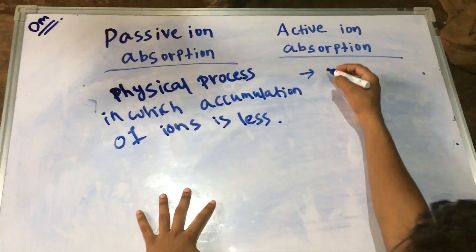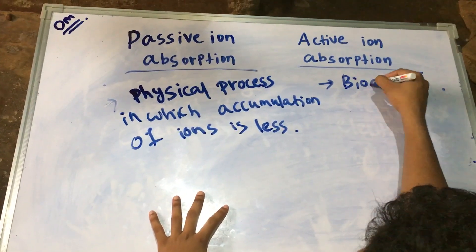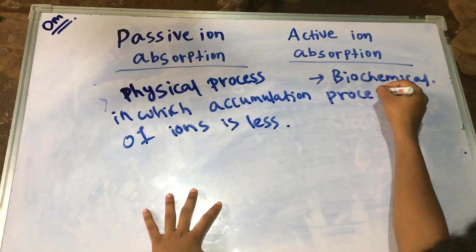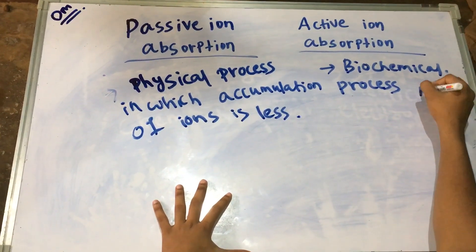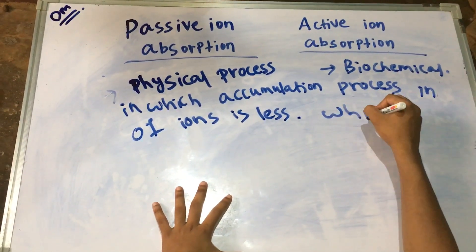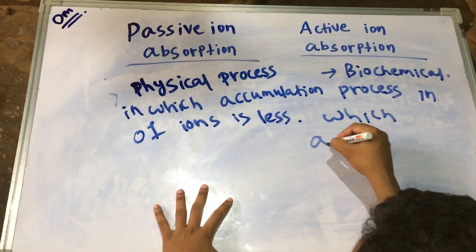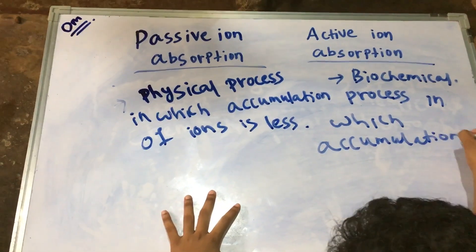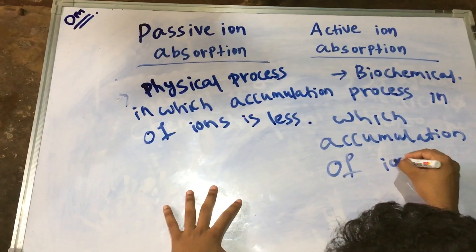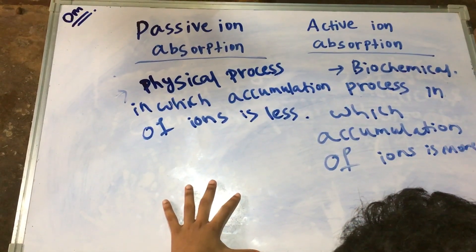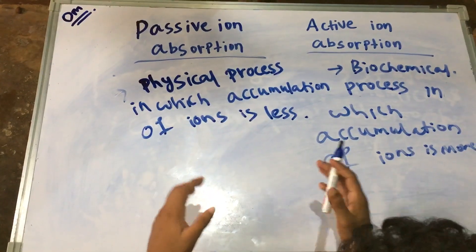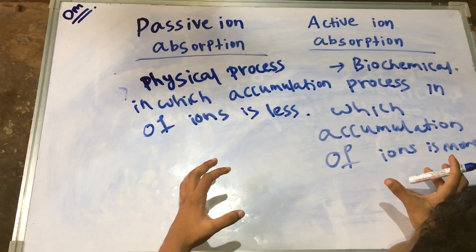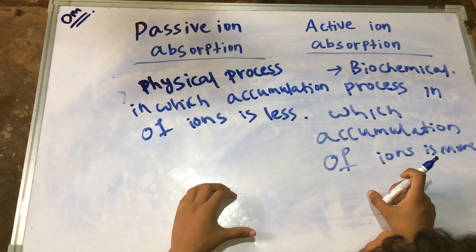But in case of active ion absorption, it is a biochemical process, in which accumulation of ions is more. So this is the basic difference between passive ion absorption and active ion absorption. Thank you.